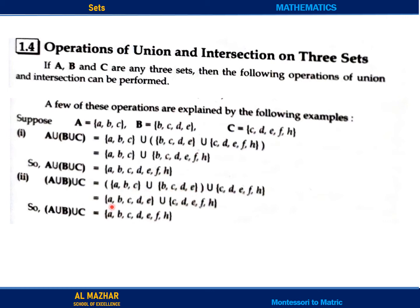So these two of them will join — A, B, C, D, E. And union with C — elements are C, D, E, F, H. Then this is the second set of elements; we will join them all together to get the final union result.